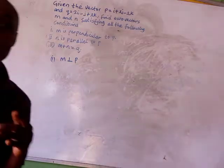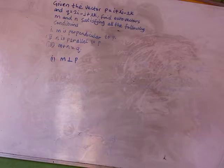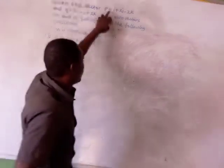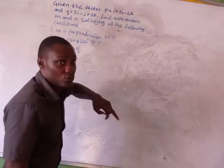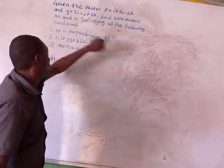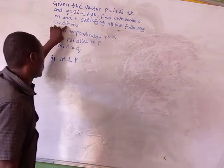In this lesson, we are going to look at a question lifted from the I-Pass further math past question bank. The question goes: given vector P equals i plus 2j minus 2k and vector Q equals 2i minus j minus 2k, find two vectors M and N satisfying the following conditions.